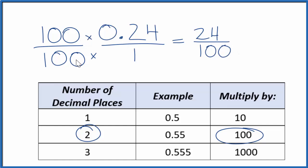And really, 100 divided by 100, that's just 1. So we multiplied by 1. We didn't change the value. 0.24, that's equal to 24 over 100.